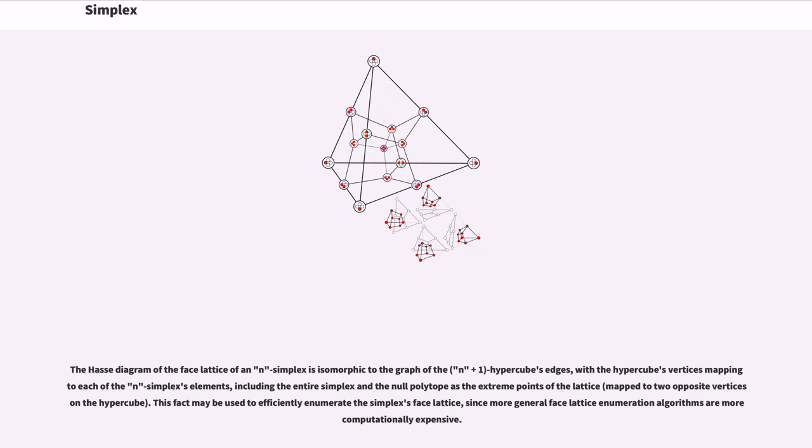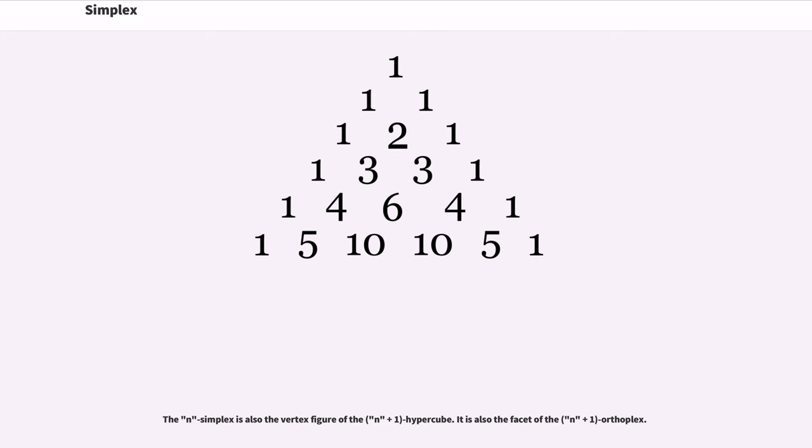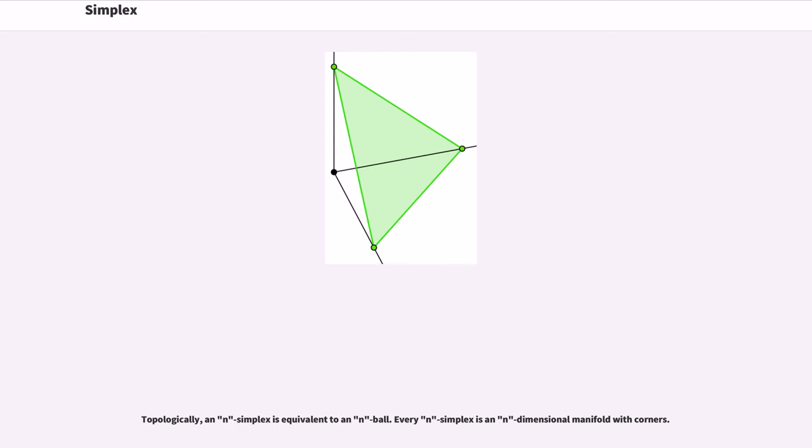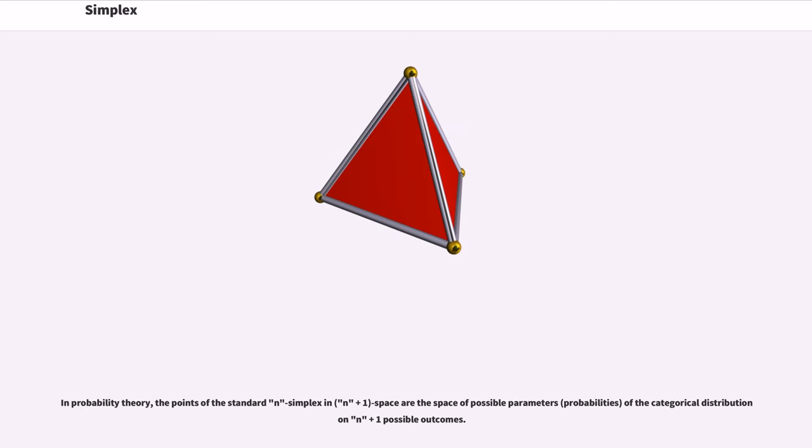The Hasse diagram of the face lattice of an n-simplex is isomorphic to the graph of the n+1 hypercube's edges, with the hypercube's vertices mapping to each of the n-simplex's elements, including the entire simplex and the null polytope as the extreme points of the lattice. This fact may be used to efficiently enumerate the simplex's face lattice, since more general face lattice enumeration algorithms are more computationally expensive. The n-simplex is also the vertex figure of the n+1 hypercube. It is also the facet of the n+1 orthoplex. Topologically, an n-simplex is equivalent to an n-ball. Every n-simplex is an n-dimensional manifold with corners. In probability theory, the points of the standard n-simplex in n+1 dimensional space are the space of possible parameters of the categorical distribution with n plus 1 possible outcomes.